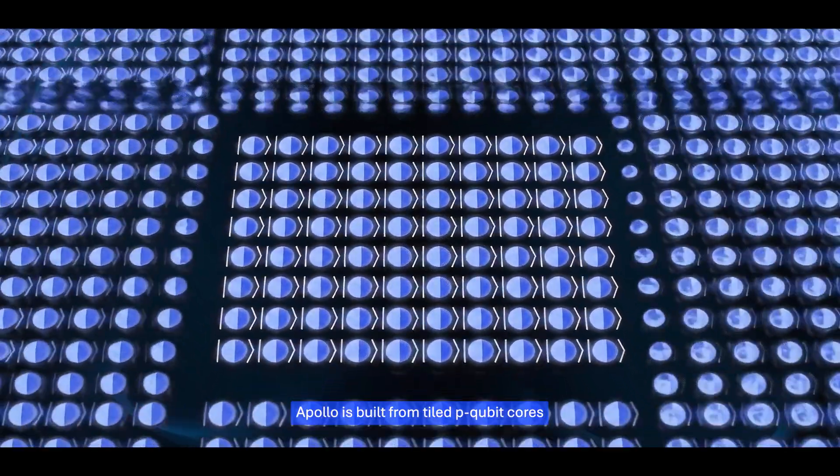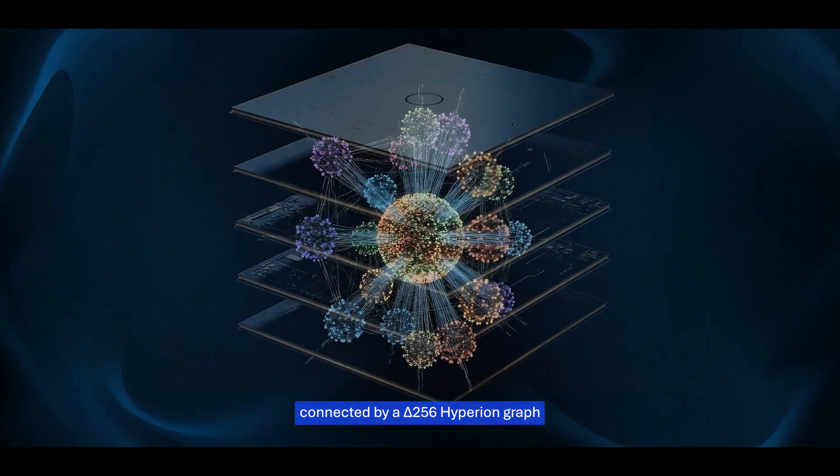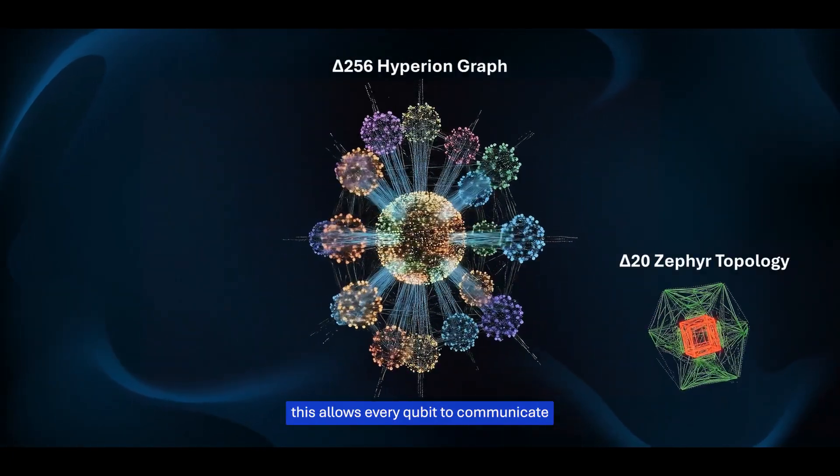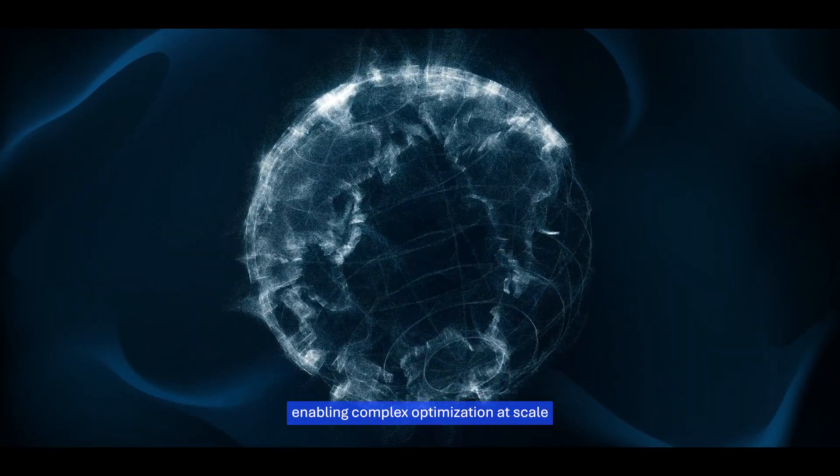Apollo is built from tiled p-qubit cores, connected by a 256-Hyperion graph. This allows every qubit to communicate across a high-connectivity mesh, enabling complex optimization at scale.